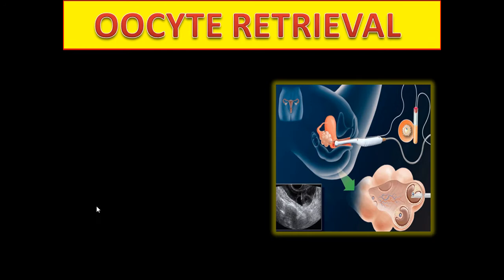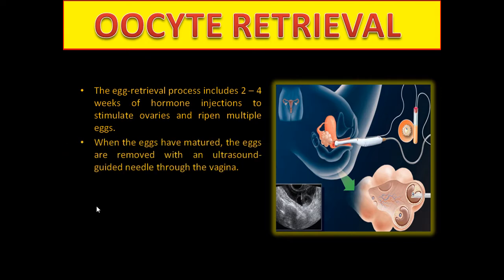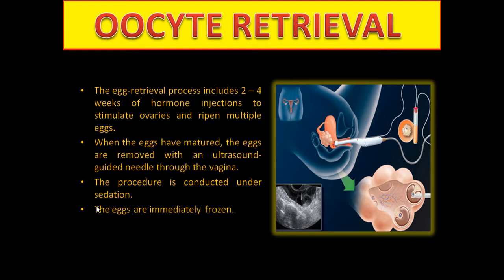After sperm retrieval there is oocyte retrieval. The egg retrieval process includes 2–4 weeks of hormone injections to stimulate the ovaries to ripen multiple eggs. When the eggs have matured, they are removed with an ultrasound-guided needle through the vagina under sedation. The eggs are immediately frozen.